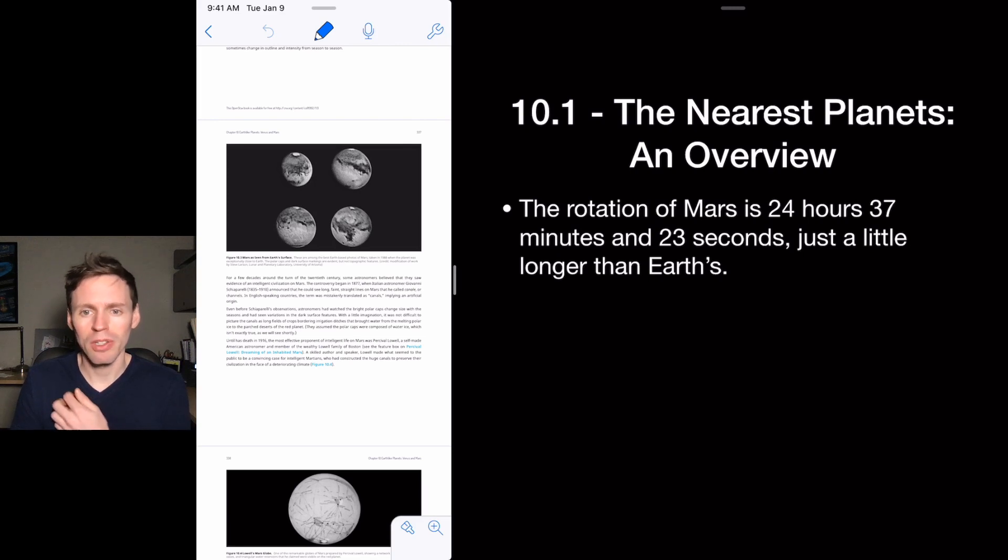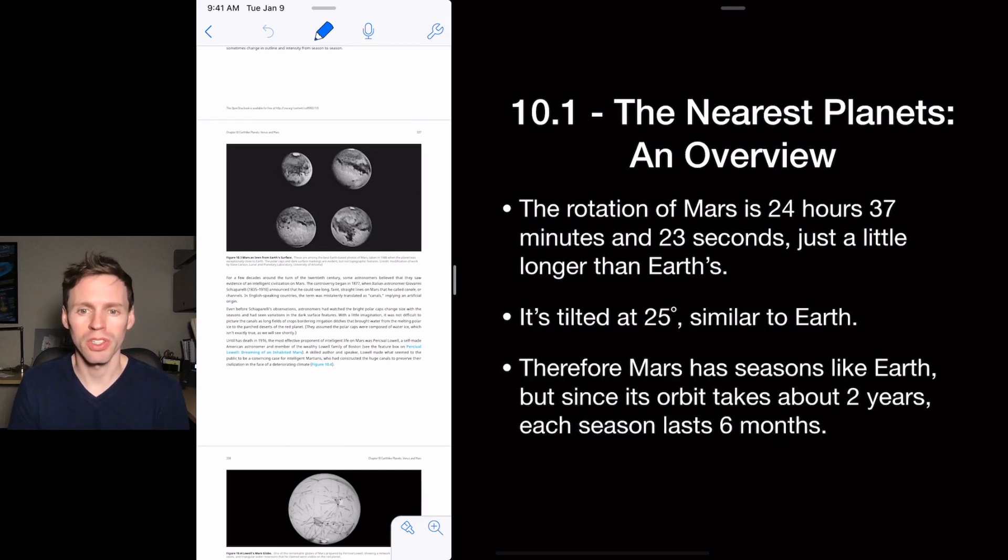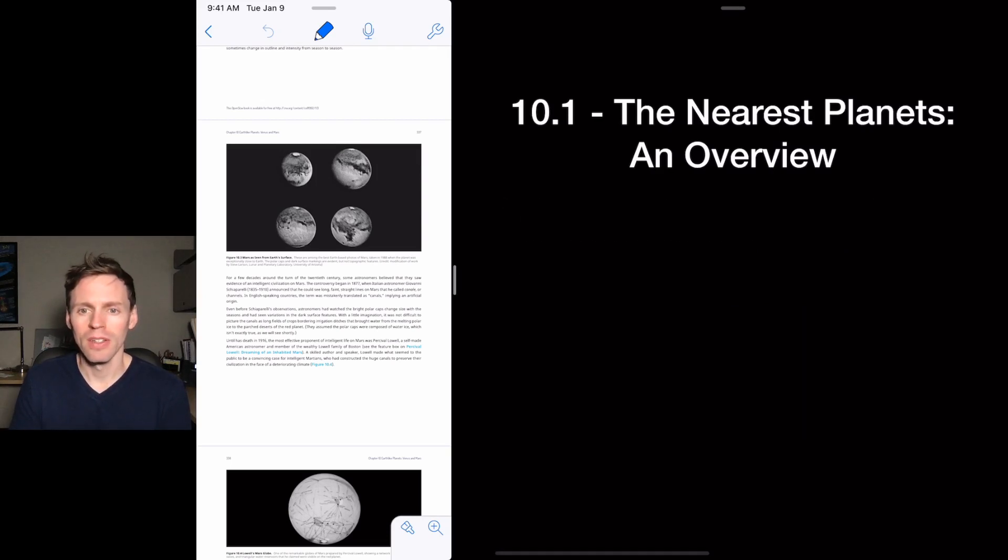So Mars takes about 24 hours to orbit itself, one day. So it's similar. It's tilted at 25 degrees, which is similar to Earth, same tilt. So it has seasons like Earth, but since it takes two years to go around the Sun compared to Earth, one Earth year, the seasons last about six months instead of three months.